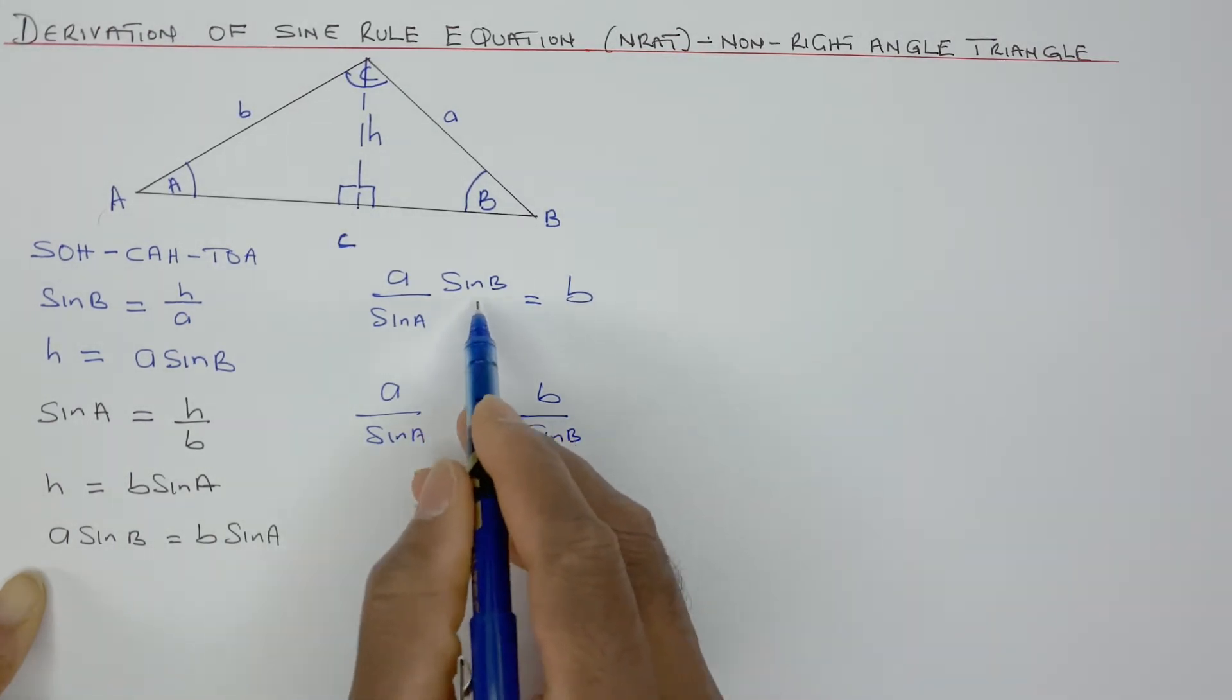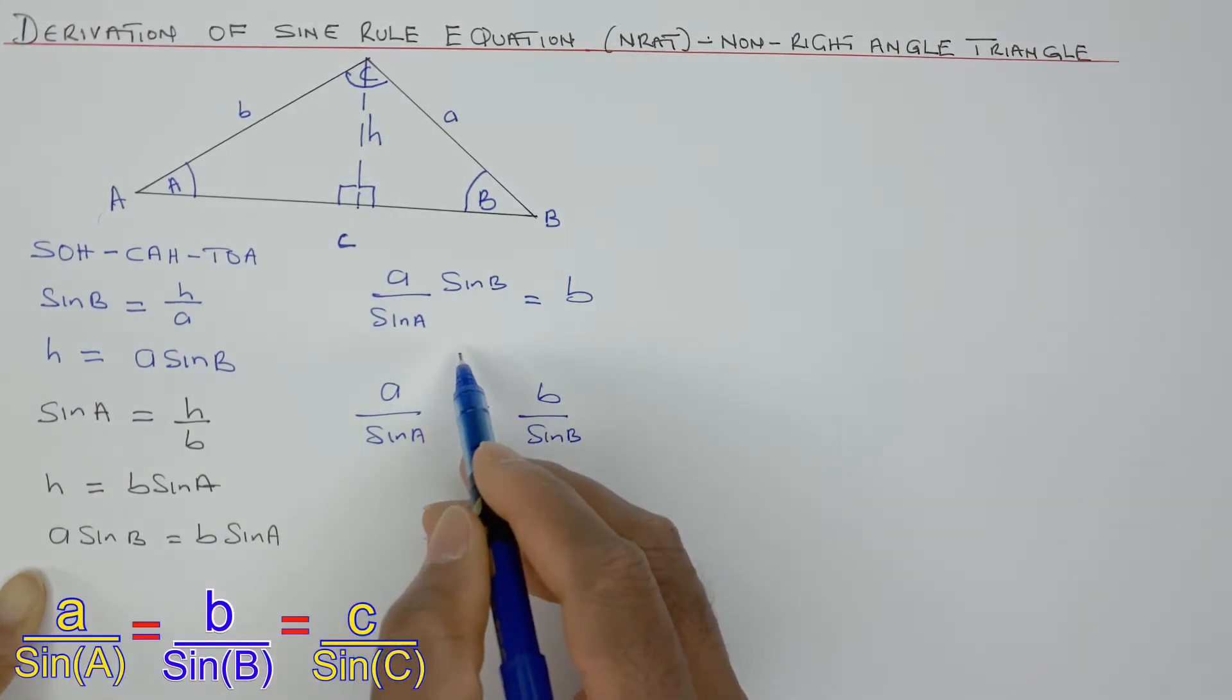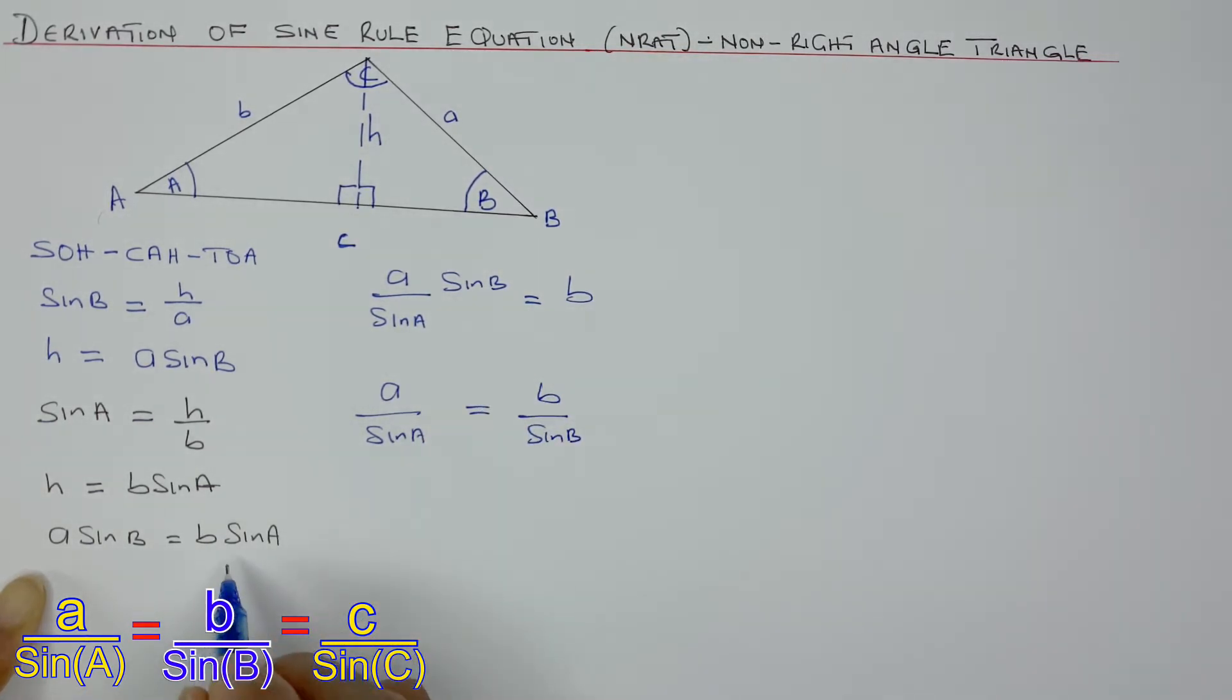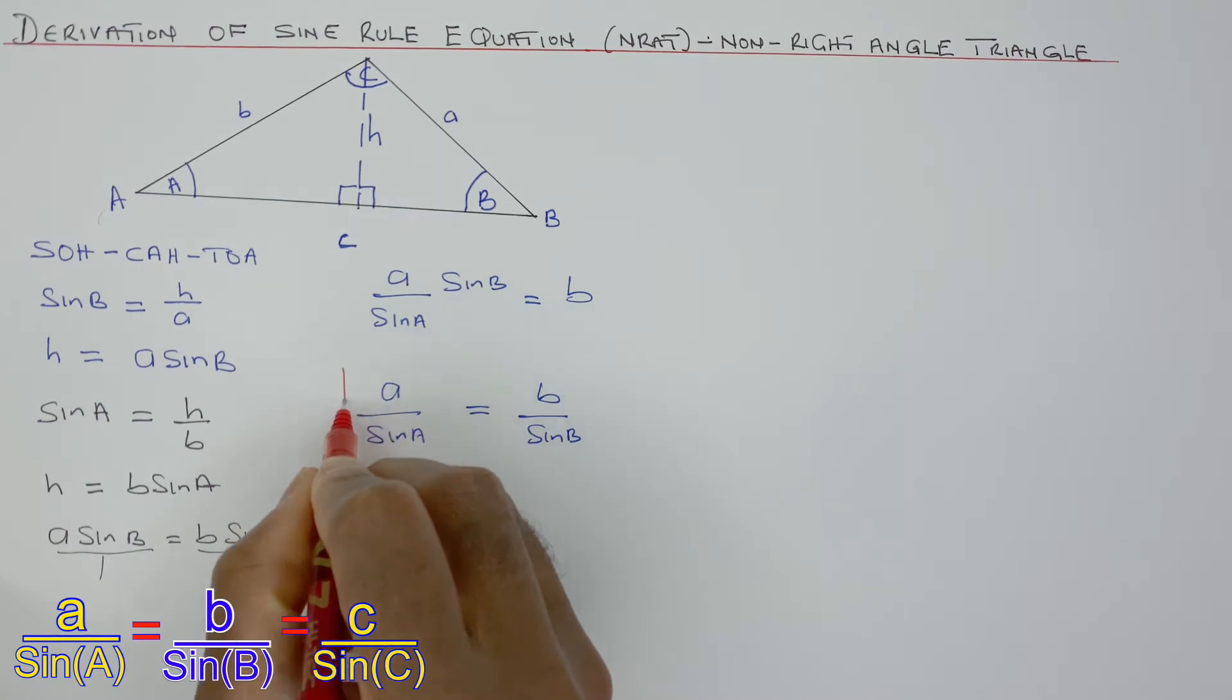Because if I divide that by sine B, it will cancel out and then it will be also here. Or you can do something called cross multiply. Most people do that a lot. So cross multiply. That sine A we go down, sine B we go down. But this is the formula that we are looking for.